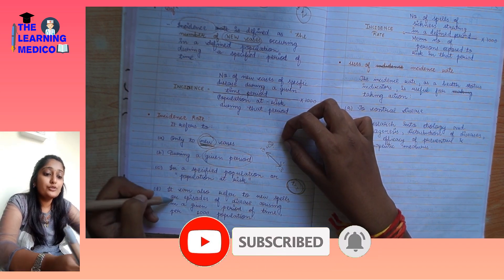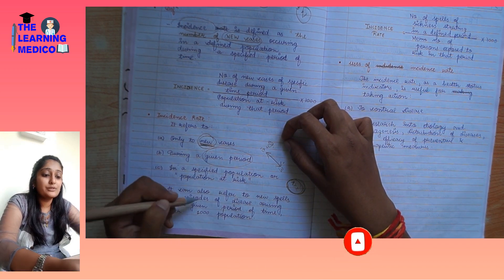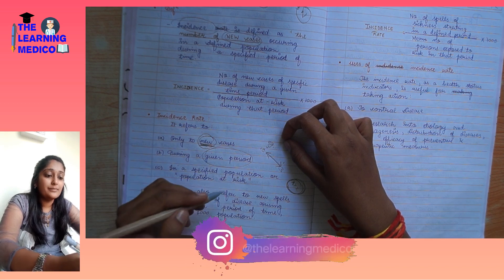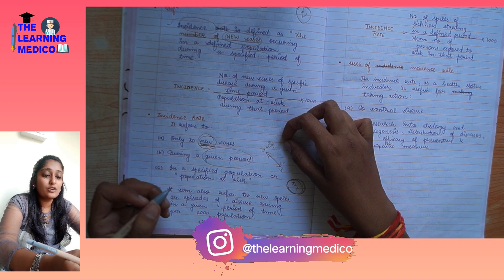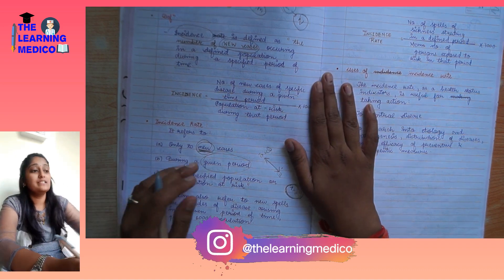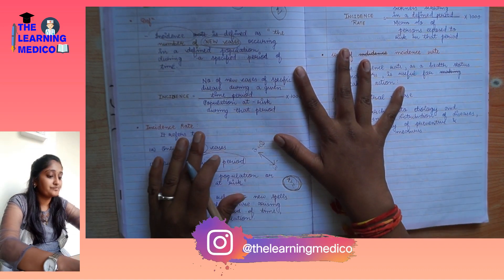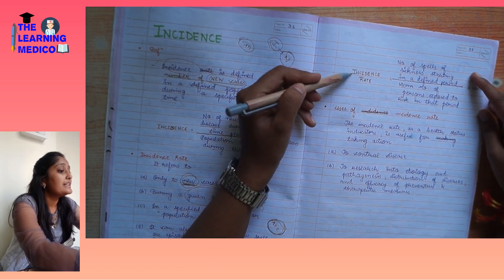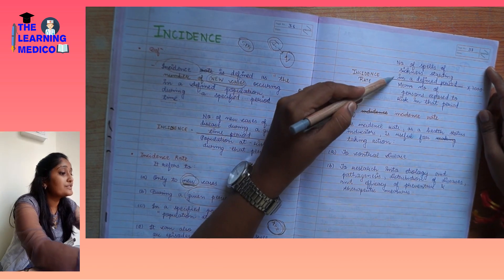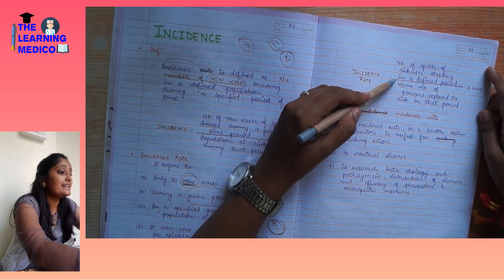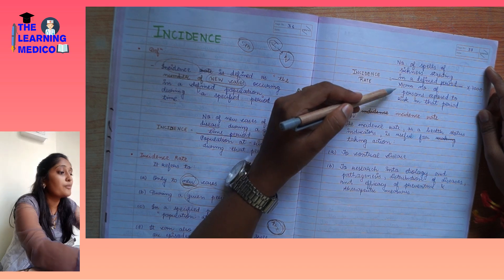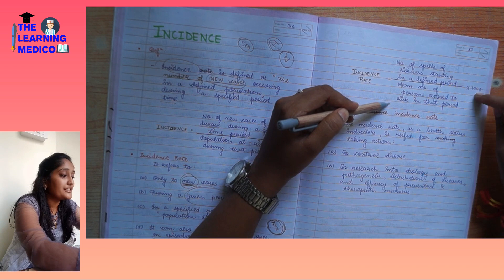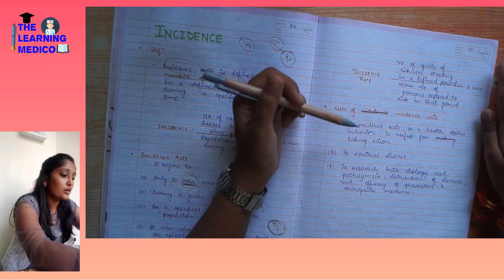Incidence can also refer to new spells or episodes of disease arising in a given period of time. So incidence rate means number of new spells of sickness starting in a defined population, upon mean number of persons exposed to risk at that period, into 1000.